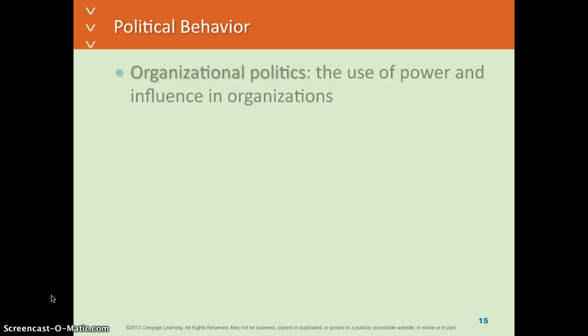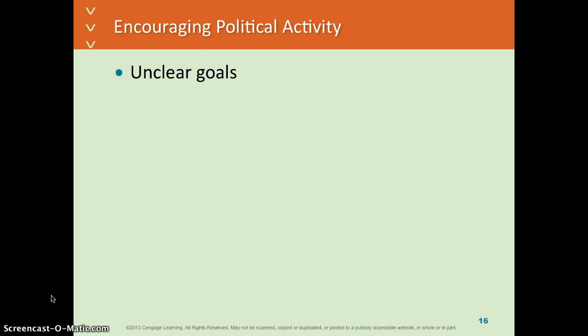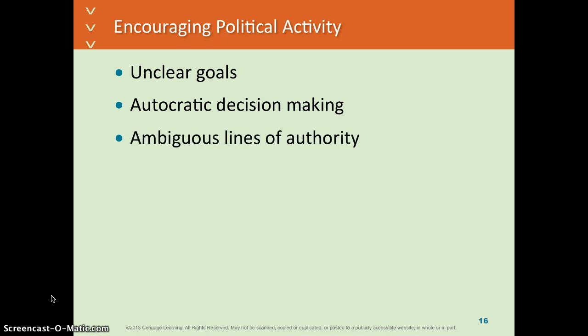Political behavior refers to organizational politics — the use of power and influence in organizations. It exists whether we like it or not. It's behavior that's not officially sanctioned by an organization, but it allows for influence to meet goals. Political power becomes strong when there are unclear goals, autocratic decision making with one person making decisions, ambiguous lines of authority, scarce resources where people are competing, and uncertainty. The textbook notes that political behavior can be thought of as positive or negative, but in research it seems essentially neutral.